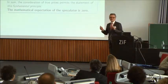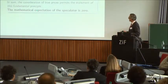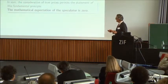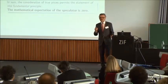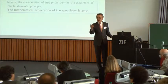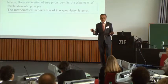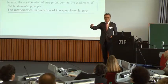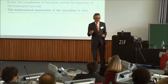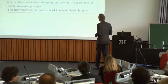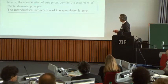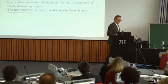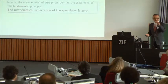Now we come to what we call today the efficient market hypothesis. Bachelier says: 'It seems that the market — the aggregate of speculators at a given instant — can believe in neither a market rise nor a market fall, since at each quoted price there are as many buyers as sellers.' We are in 1900 here. Then comes the combination of it all — the mathematical expectation of the speculator is zero. The consideration of true prices — by which he means properly discounted prices, also correcting for coupon payments — permits the statement of this fundamental principle.